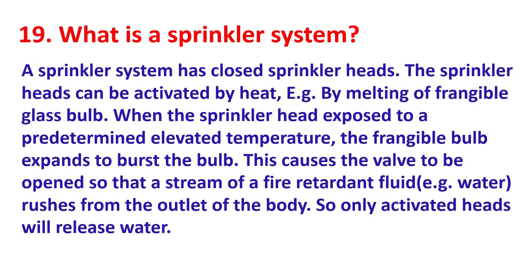What is a sprinkler system? A sprinkler system has closed sprinkler heads that can be activated by heat — for example, by melting a frangible glass bulb. When the sprinkler head is exposed to a predetermined elevated temperature, the frangible bulb expands and bursts. This causes the valve to open so that a stream of fire-retardant fluid such as water rushes from the outlet. Only activated heads will release water.